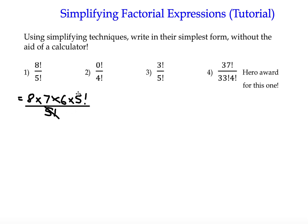We can divide through by 5 factorial — they cancel to 1 — leaving us with 8 multiplied by 7 multiplied by 6 over 1. So 8 times 7 is 56, and 56 multiplied by 6 gives us 336.